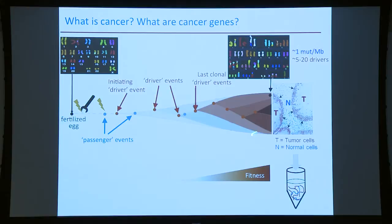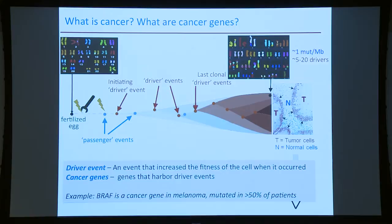We take this piece of tissue that contains cancer cells and normal cells and we grind it up. We take DNA, RNA, or proteins — whatever we want to study — put it in a tube, sequence it, and that's what we analyze. A driver event is an event that increased the fitness of cells when it occurred, and a cancer gene is a gene that harbors driver events. For example, BRAF is a cancer gene in melanoma, mutated in roughly 50% of melanoma patients.